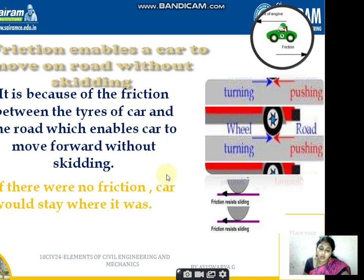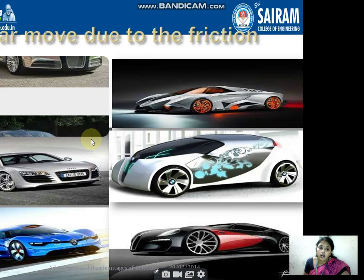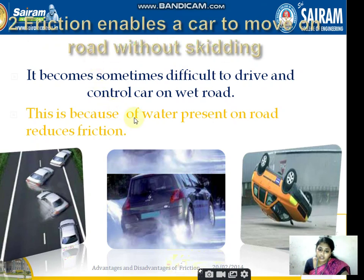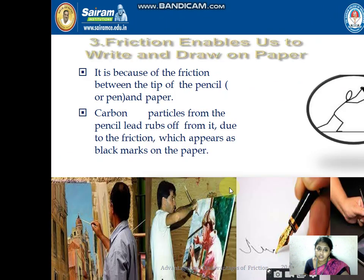Rolling friction means one object rolls over another object; sliding friction means one object slides over another. Rolling friction can be observed in cars where a wheel turns on the road, pushing the road in the opposite direction, which is why it can move in one particular direction. Here are examples of wheels and their design for frictional resistance. Friction enables your car to move on the road without skidding. If water or oil is spilled on the surface, it is very difficult for the tire to move forward.